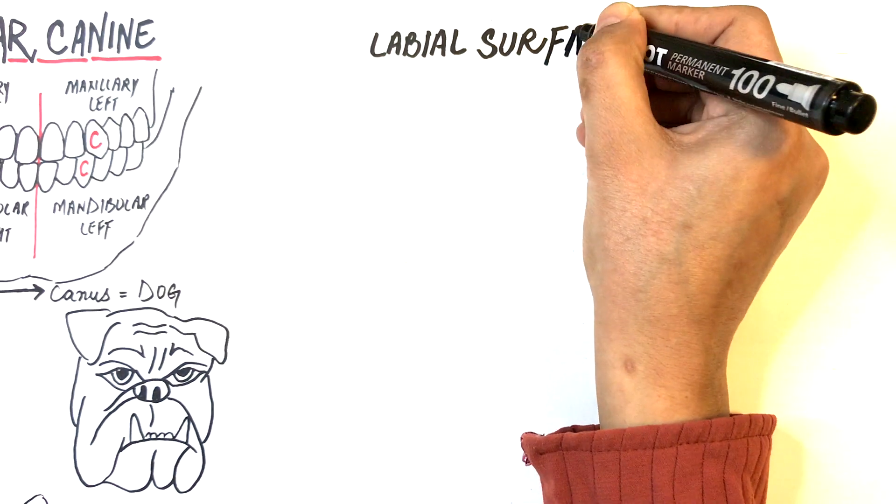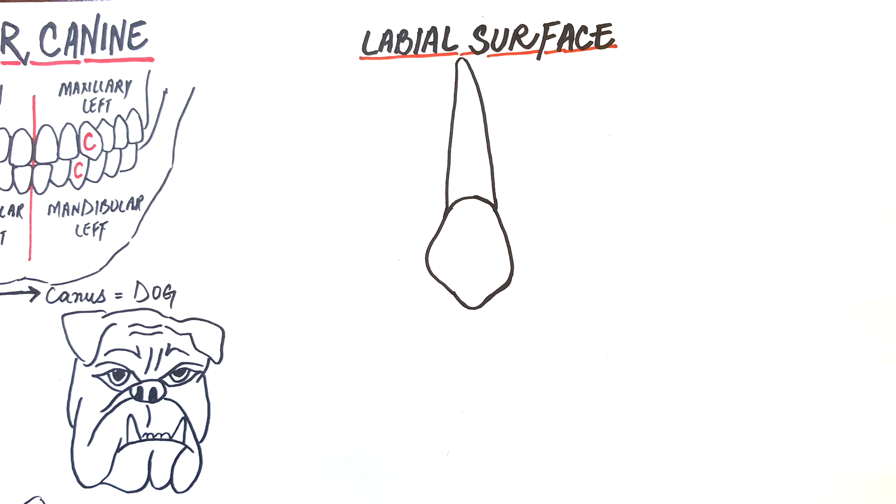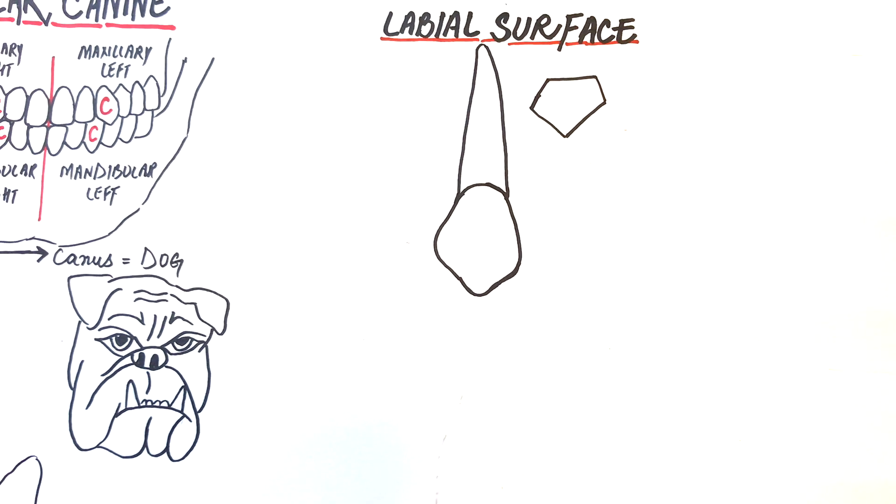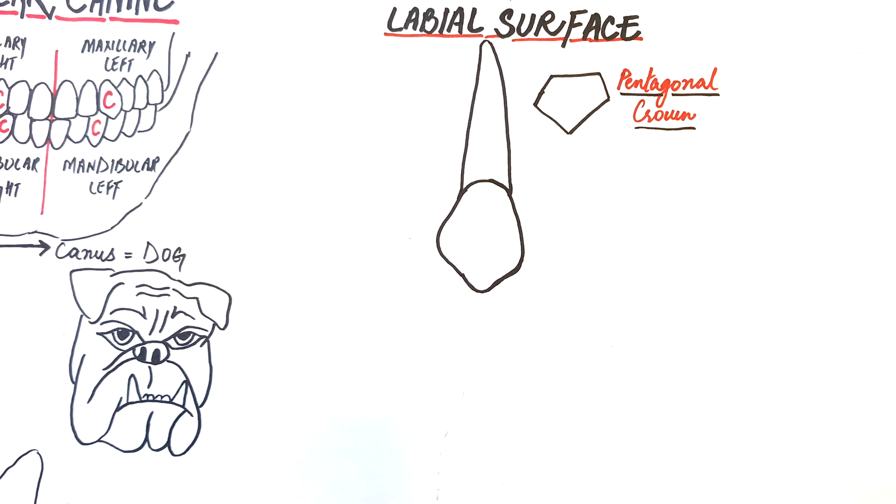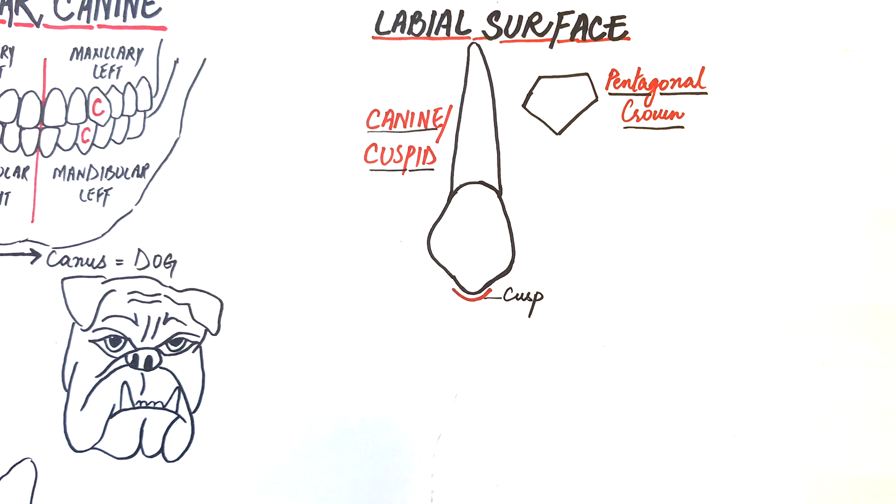From the labial or facial aspect, the tooth is convex in all directions and is pentagonal in shape. The pentagonal shape is mostly due to the single cusp of the tooth. That's why they are often called cuspids, which means a tooth with a single cusp only.